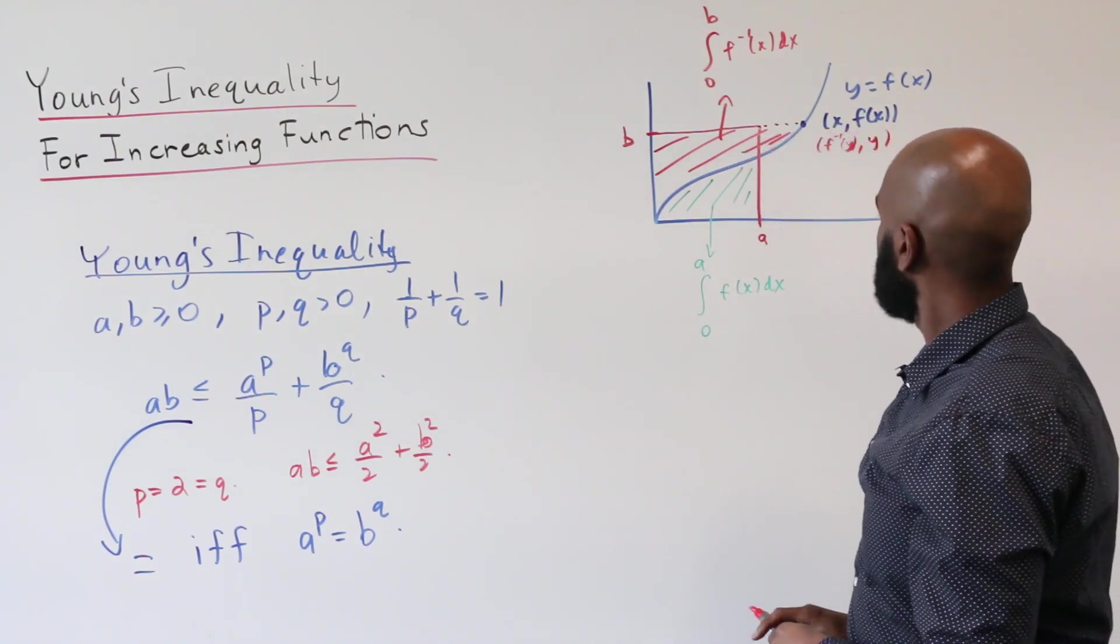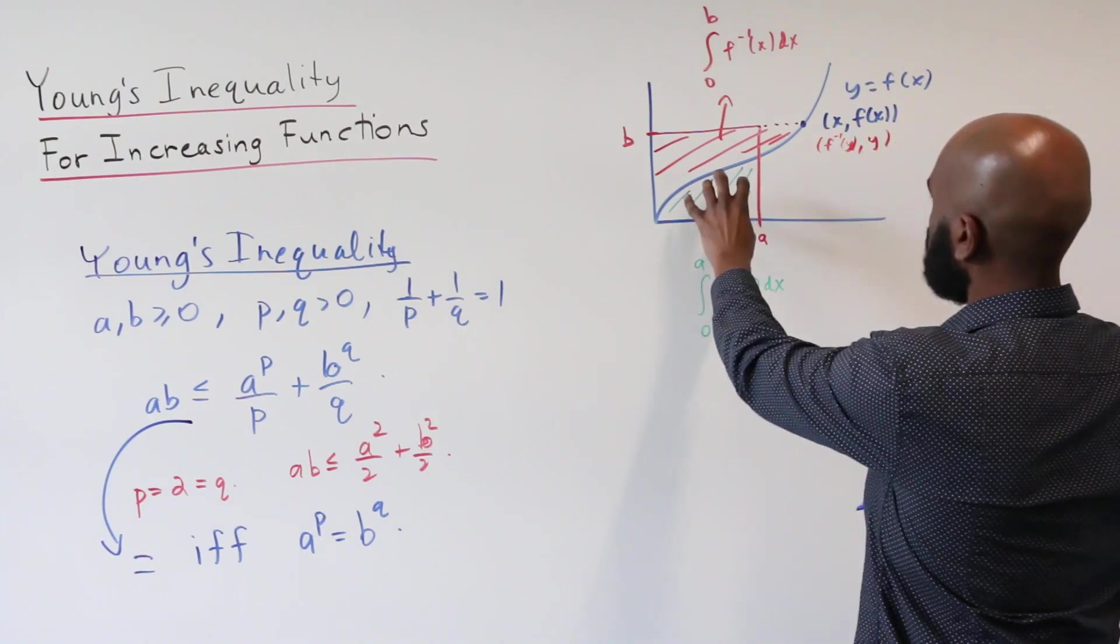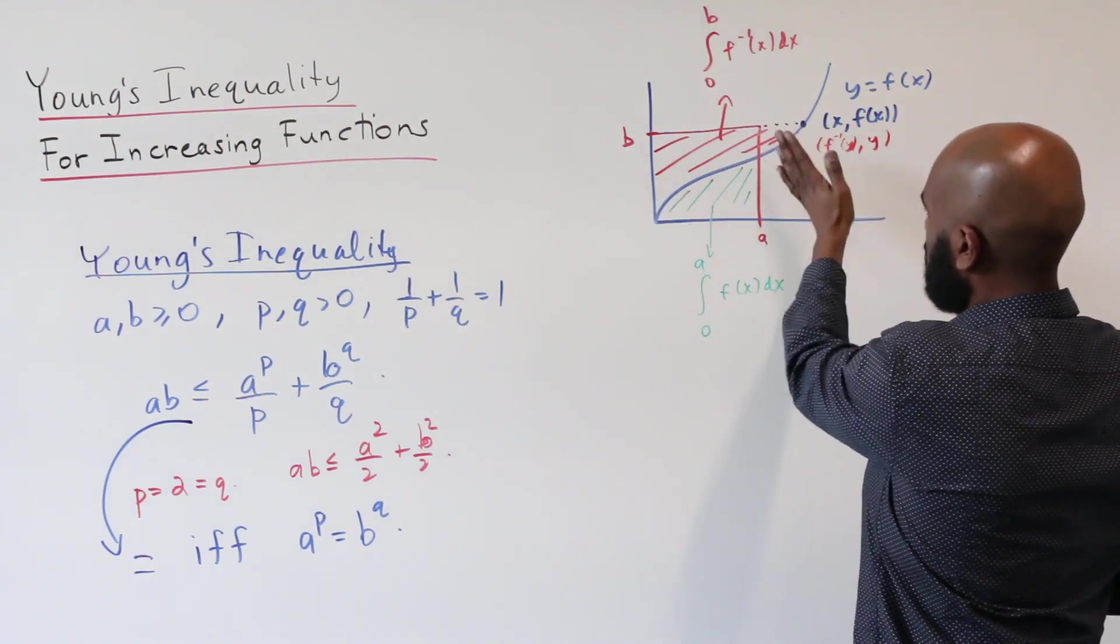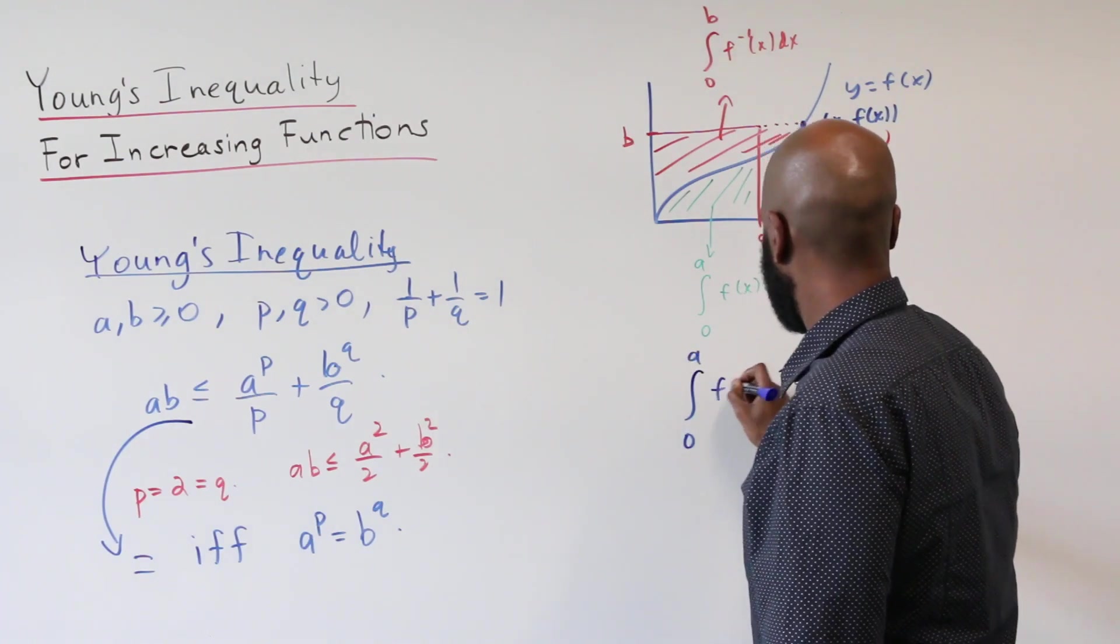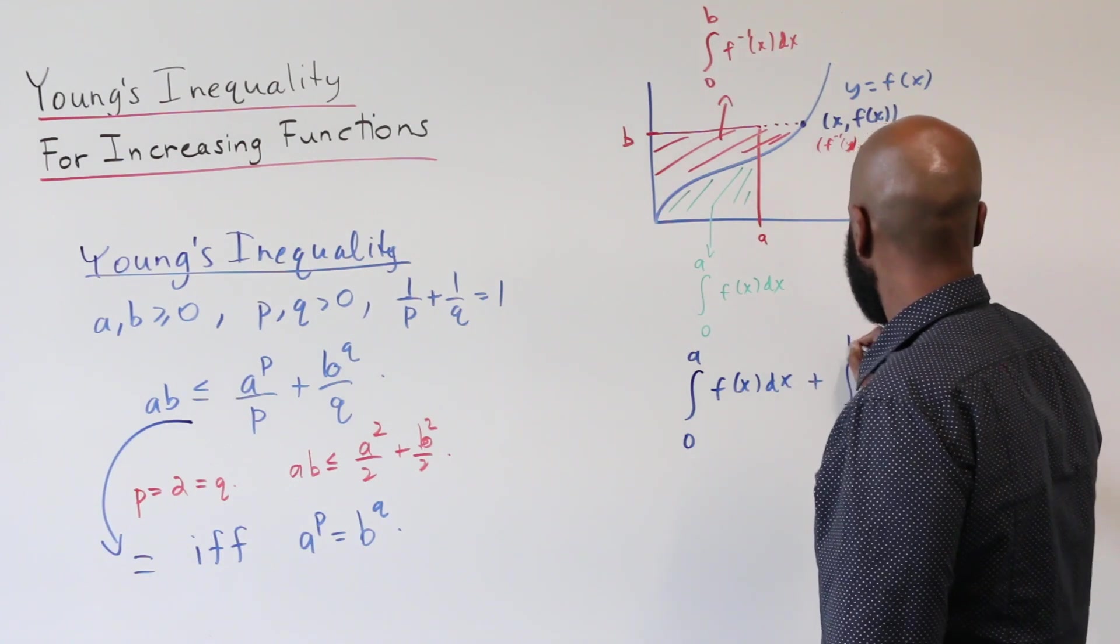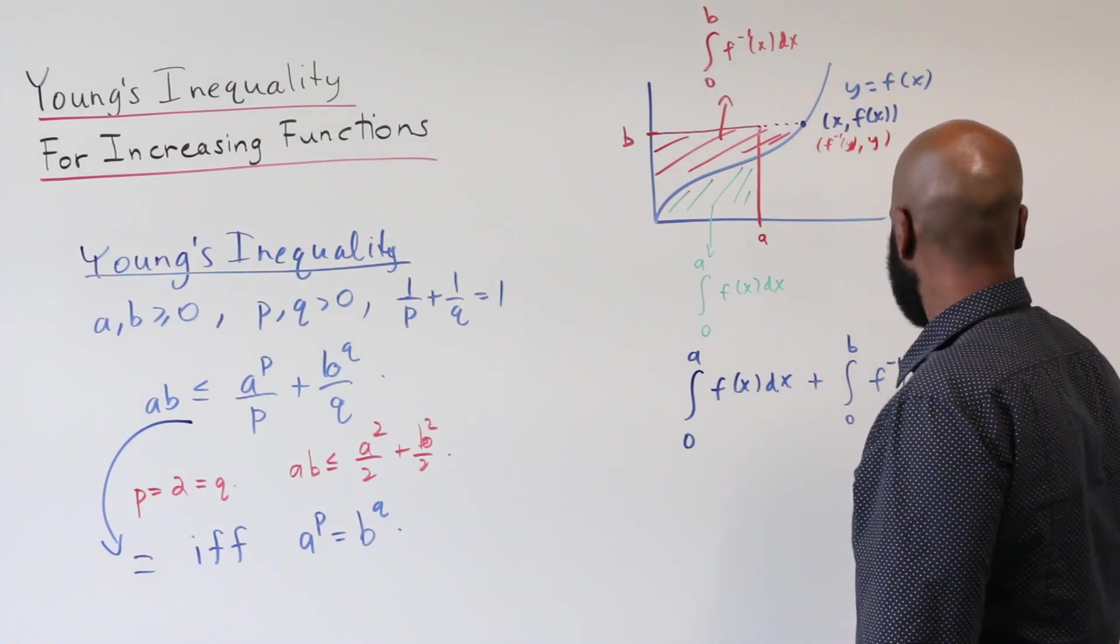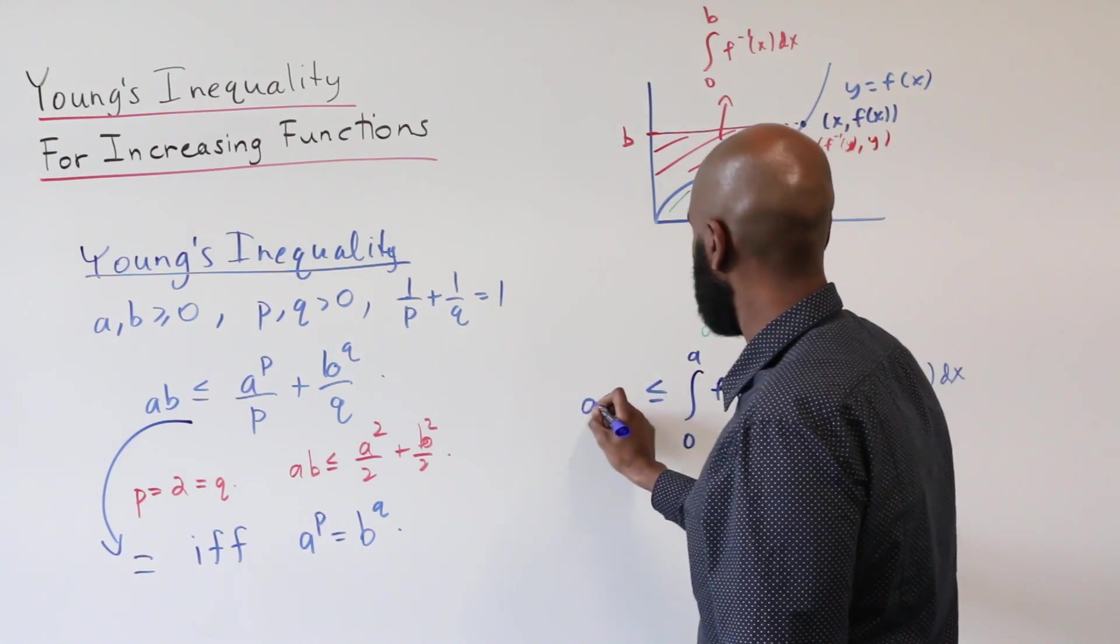So what this is saying then is, if we add up these two integrals, by the way we've drawn them, that the integral from 0 to A of f of x dx plus the integral from 0 to B of f inverse dx is at least A times B.